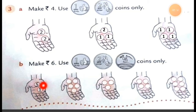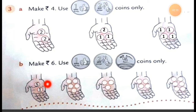One example has already been done for us. If we have 2 coins, which 2 coins can we use to make rupees 6? We can use 1 coin of rupees 5 and 1 coin of rupees 1. These 2 coins make rupees 6. So, it is 6 rupees now.